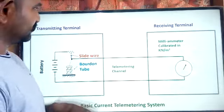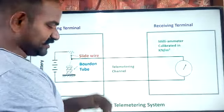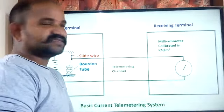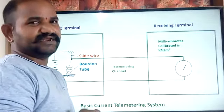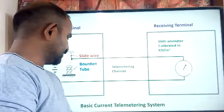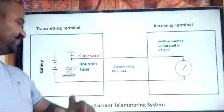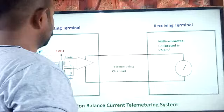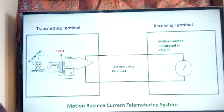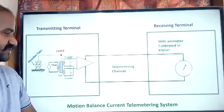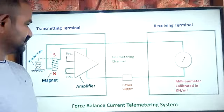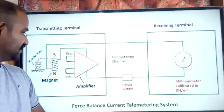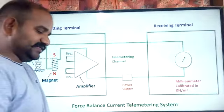This is the current telemetering system — one type of current telemetering system. In this case we are sending the information in terms of current instead of voltage. There are some drawbacks when sending the signal in terms of voltage, so to overcome that we use the current telemetering system. In the current telemetering system we have two types: motion balance and force balance telemetering system.